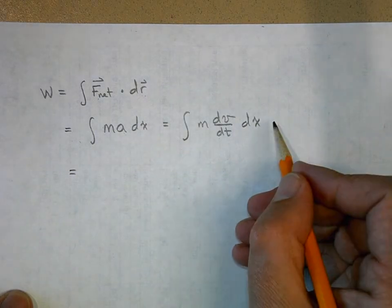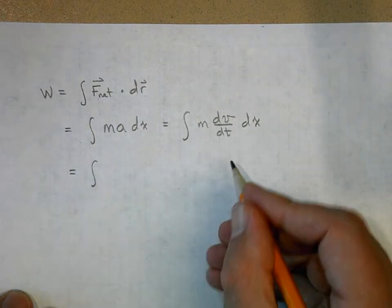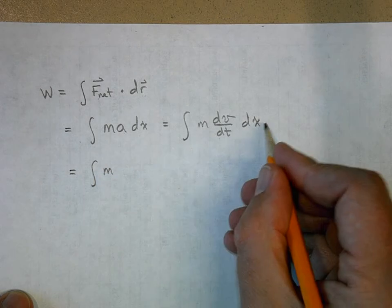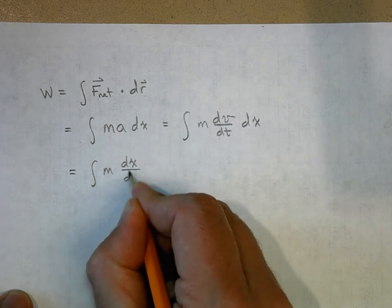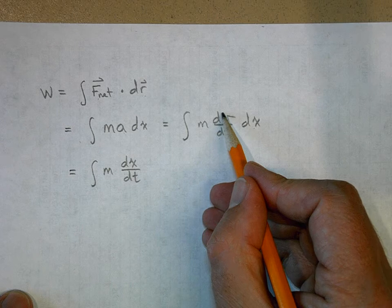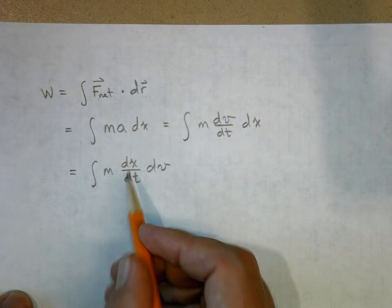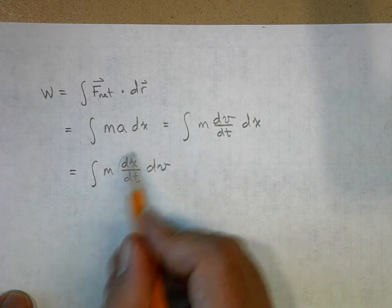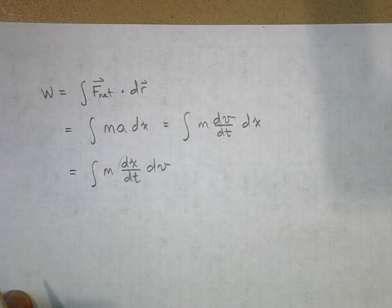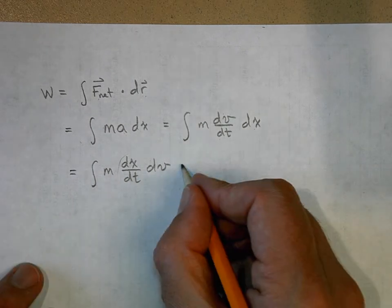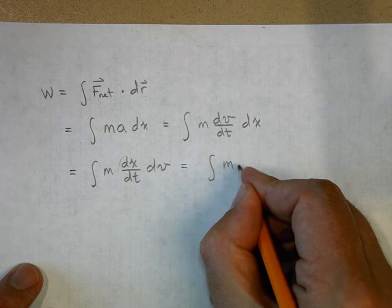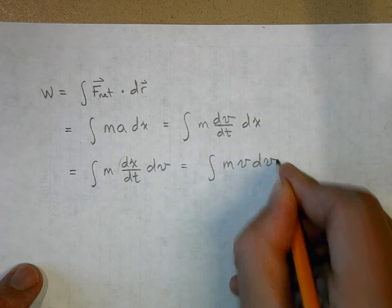m dv dt times dx. Now this is acceleration right here. We can use the chain rule here to rearrange these variables a little bit. Look at this little trick we're going to do: this is mass times dx dt. All I'm doing is moving the dx over here and the dv down here. But what is dx dt? dx dt is v, it's velocity. So this is going to be mv dv.